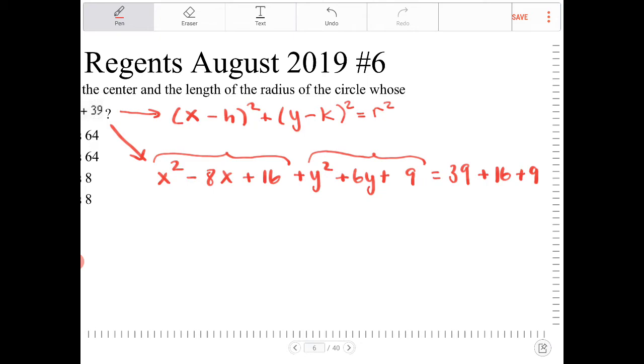We're just rewriting it. x squared minus 8x plus 16, this converts to x minus 4 quantity squared. y squared plus 6y plus 9, that converts to y plus 3 quantity squared. Again, if you're confused about how I'm able to factor that, I highly encourage you to go into the videos where I talk about completing the square in the circles unit.